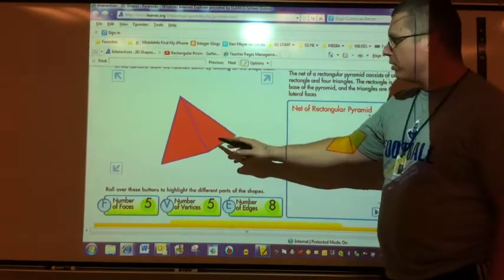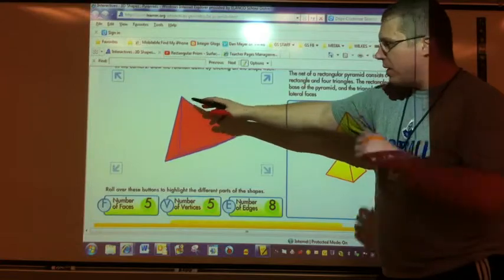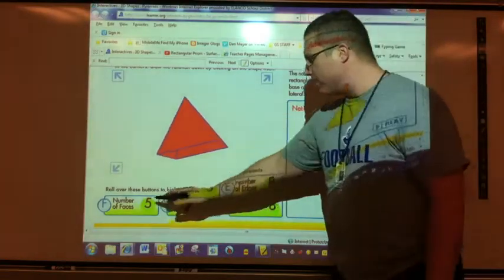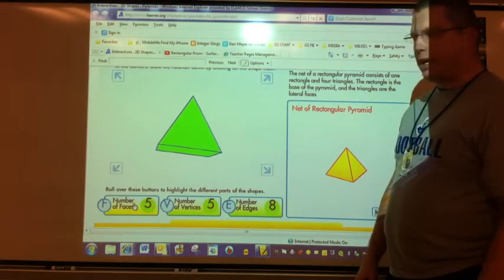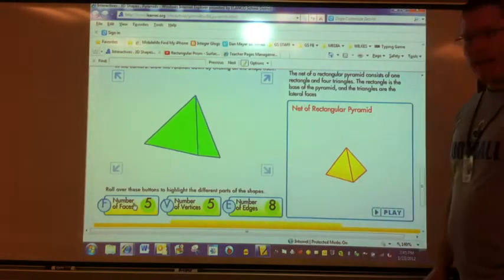As you see the shape rotating around, you'll see that it has a pinnacle at the top, four sides, triangles. If I click on number of faces, they will light up. Take a second, count them, verify that yes, there are five.